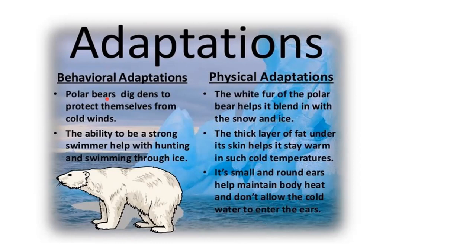The polar bear's behavioral adaptations include digging dens to avoid the cold winds of the north pole and being a very good swimmer to hunt food. Physical adaptations include white fur to blend in with snow and ice, making it easier to sneak up on prey. It also has a thick layer of fat to stay warm while swimming, and small round ears to help retain heat. All of these help the polar bear survive in that harsh environment.